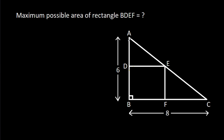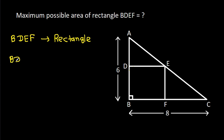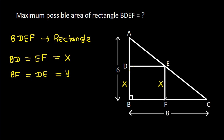In this video, we have been given that AB is 6 and BC is 8. We have to find the maximum possible area of rectangle BDEF. BDEF is a rectangle, so BD equals EF, suppose X, and BF equals DE, suppose Y. So BD is X, EF is X, BF is Y, and DE is Y. These angles will be 90 degrees.